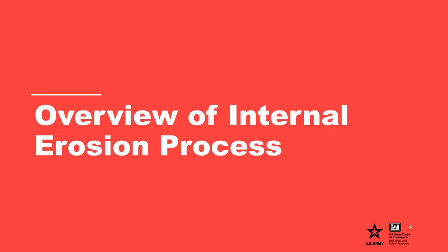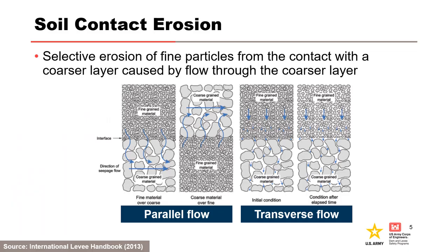Soil contact erosion is the selective erosion of fine particles from the contact with a coarse layer caused by flow through the coarser layer. For flow parallel to the interface, the particles from the fine layer are eroded and transported through the pores of the coarse material as indicated on the left. Flow transverse to the interface is commonly referred to as filter incompatibility. Contact erosion or scour has been used in the literature to describe erosion of core material at the core-foundation contact due to seepage flows within a continuous pathway in a rock foundation, but this is really a form of concentrated leak erosion. USACE added the word 'soil' in front of Eichold's term 'contact erosion' to emphasize that this process occurs at the fine-coarse soil contact and not the soil-rock contact.